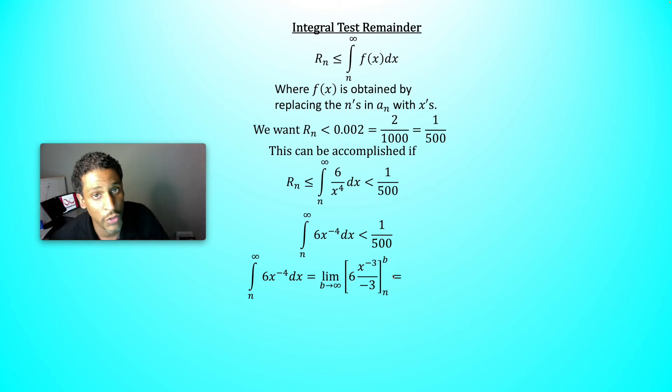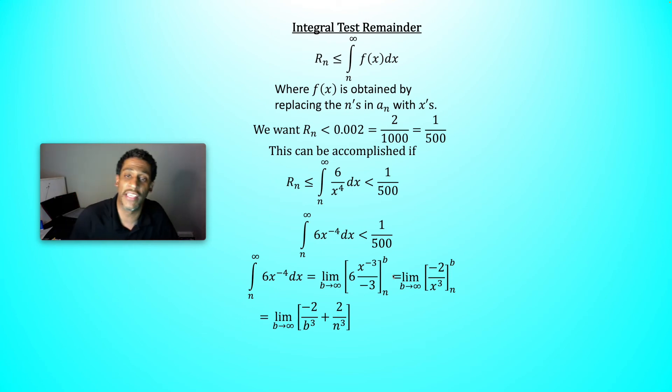Put a b in. Put n in. Let b go off to infinity. What happens? It's going to go to 0. You just get the 2 over n cubed. So therefore, the integral is equal to 2 over n cubed since that other limit went to 0.